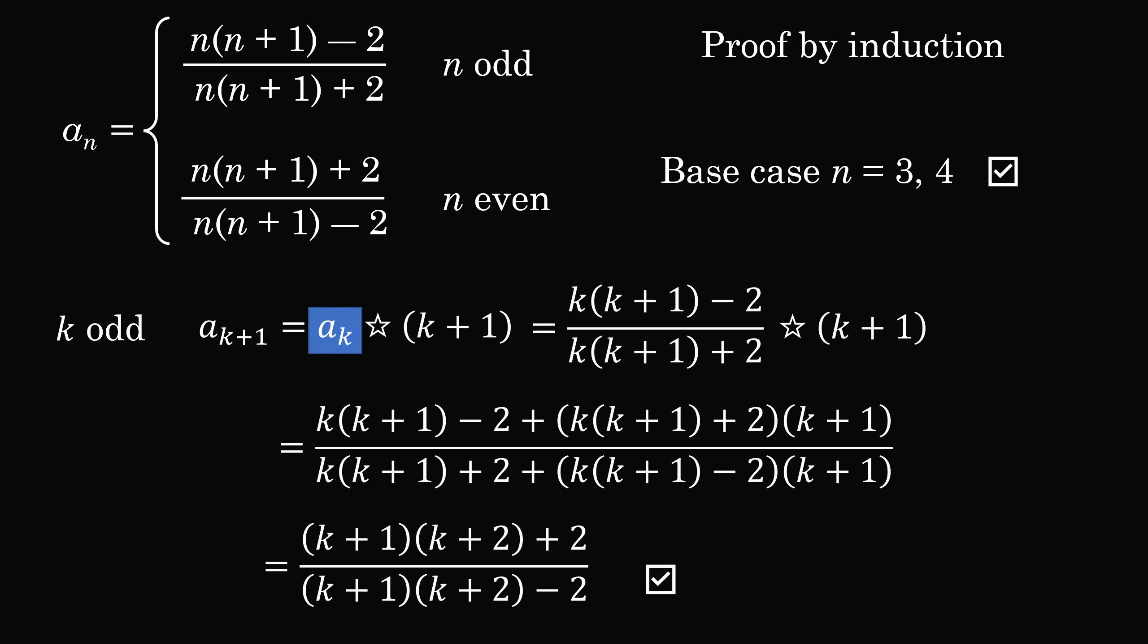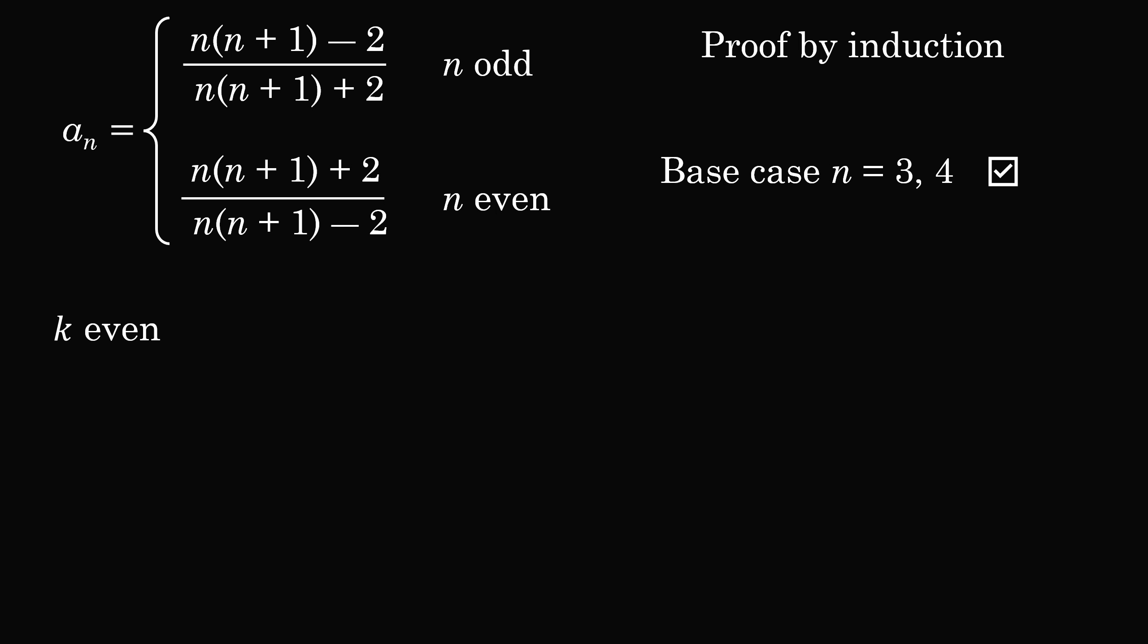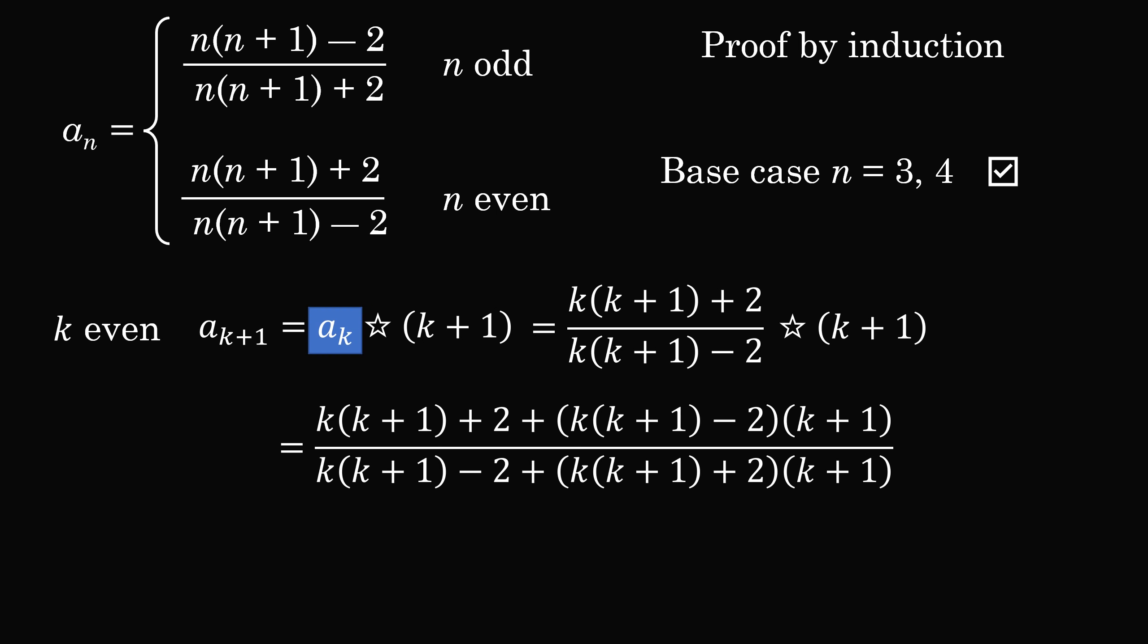Now we do the case where k is an even number. It's a very similar calculation. ak plus 1 is equal to ak star k plus 1. By the induction hypothesis, we know the formula for ak. We substitute in, and then we do simplification, and we show that the formula is in fact true for ak plus 1. So we've verified this step.